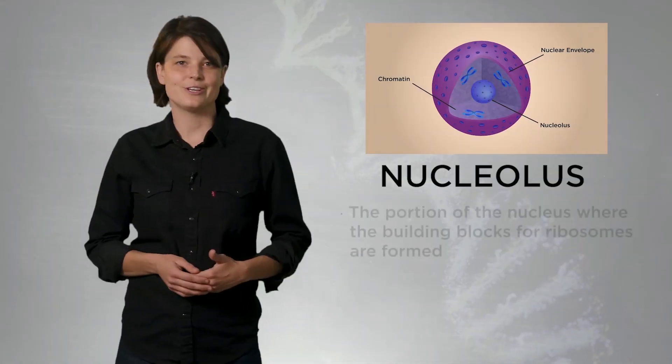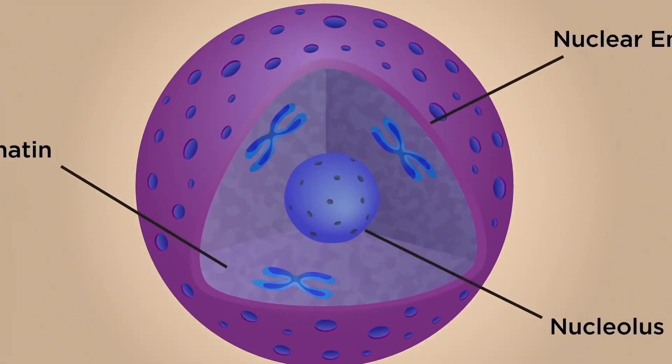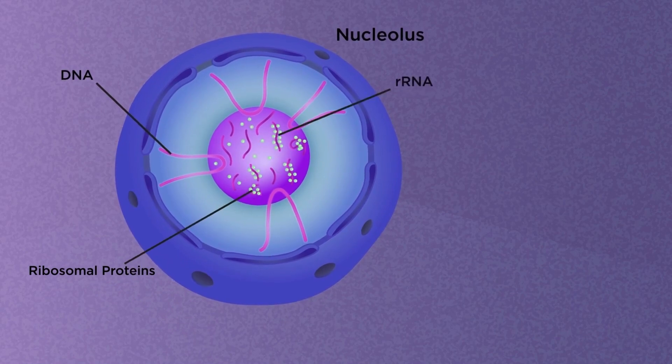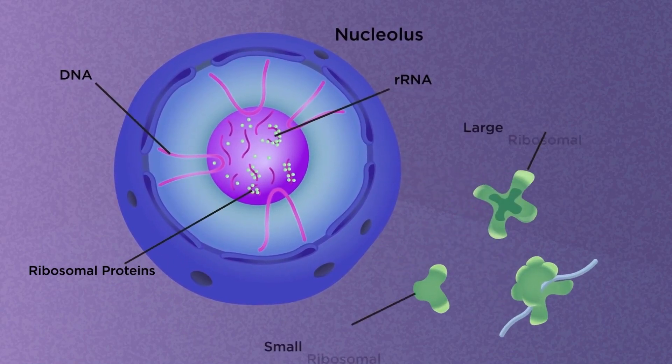The nucleolus is the portion of the nucleus where the building blocks for ribosomes are formed. Within the nucleolus, ribosomal RNA, or rRNA, is created from specific genes. Proteins that enter the nucleus from the cytoplasm combine with this rRNA to create the large and small subunits of ribosomes. These subunits then exit the nucleus and enter the cytoplasm, where they combine to create ribosomes, our next stop on our tour of the cell.